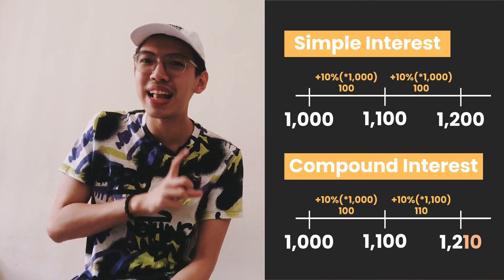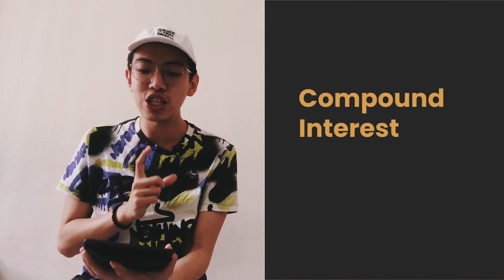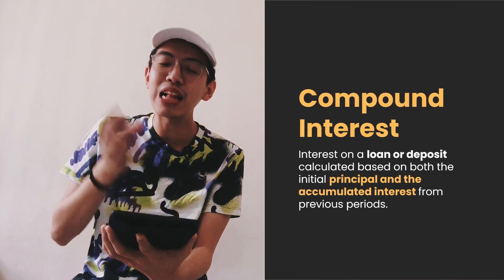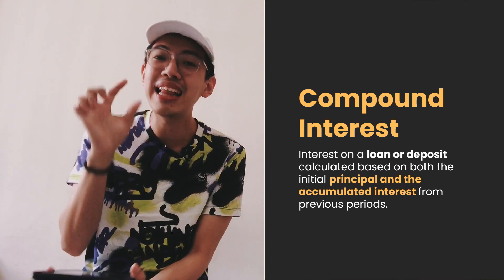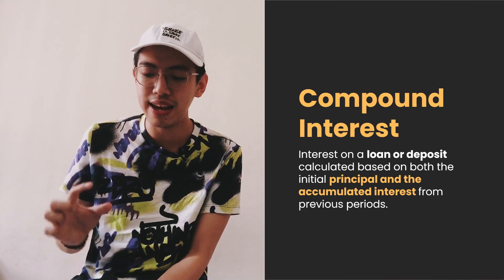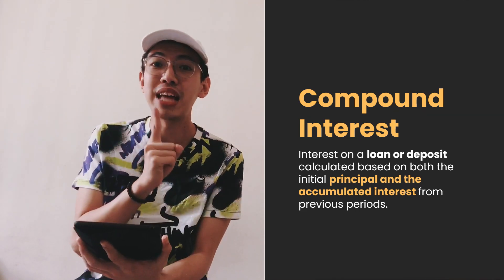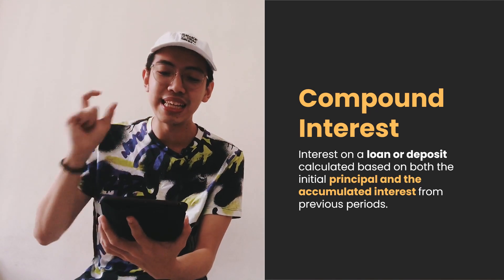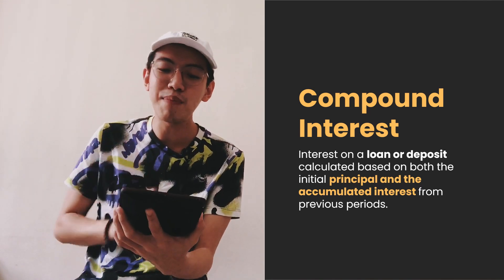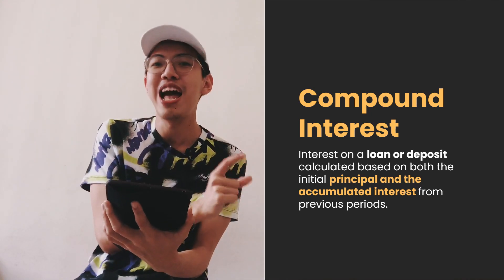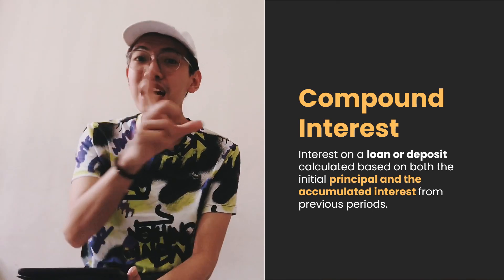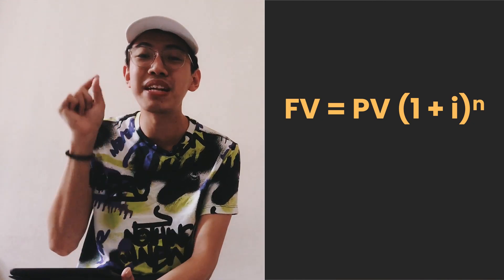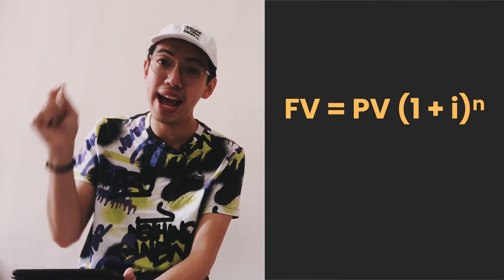Compound interest is interest on a loan or deposit calculated based on both the initial principal and the accumulated interest from the previous period. We use the same formula: FV = PV × (1 + i)^n.